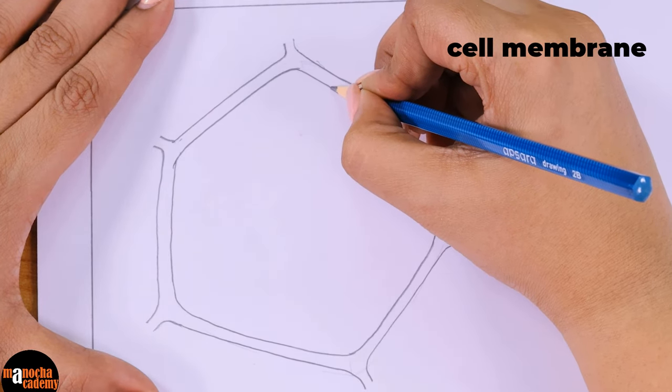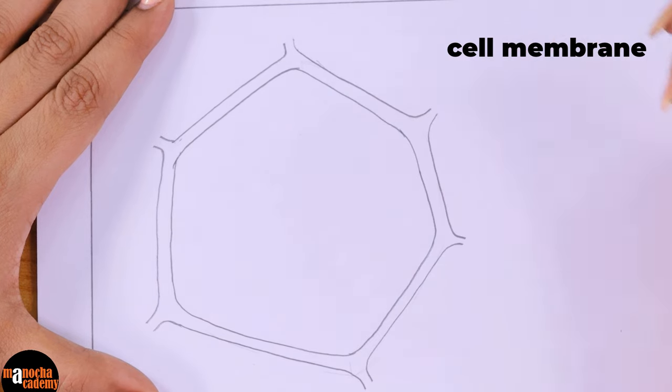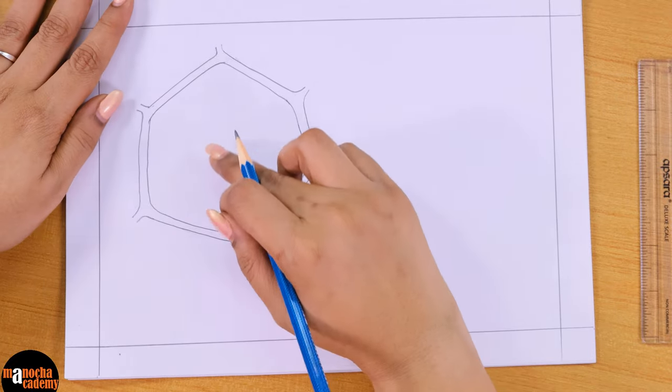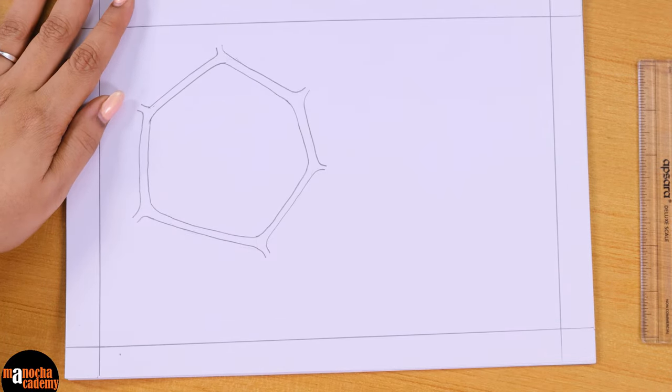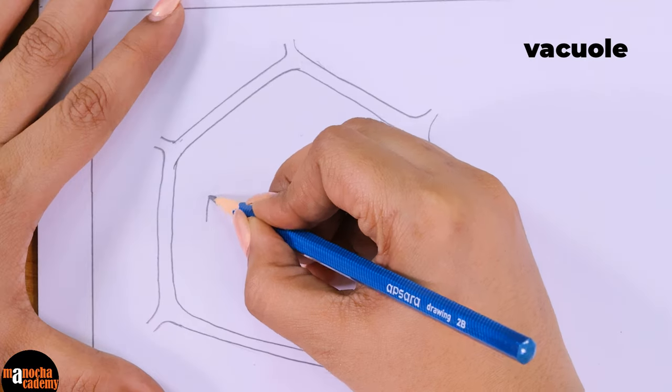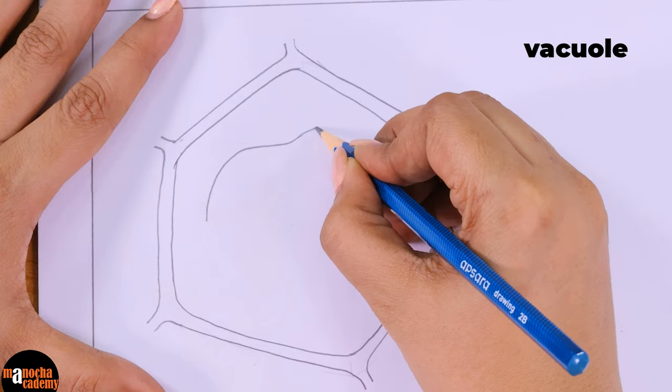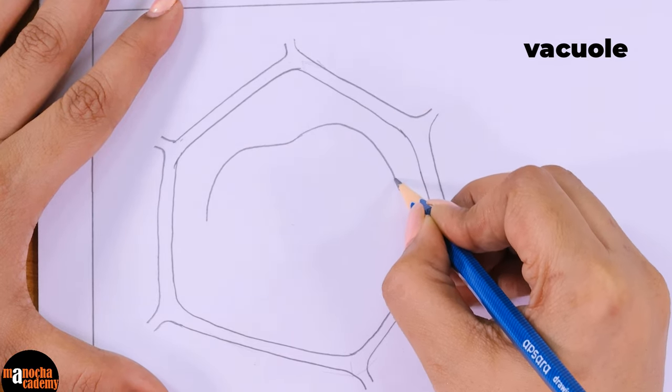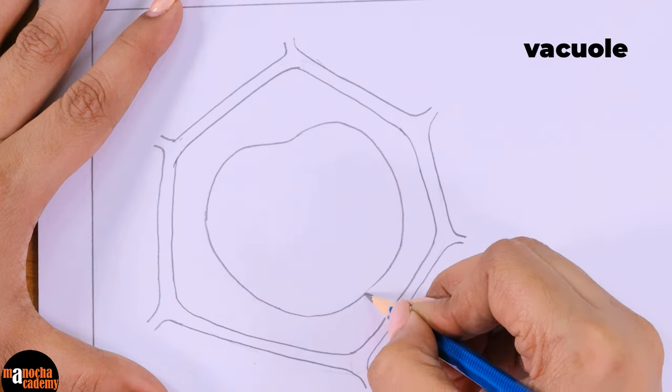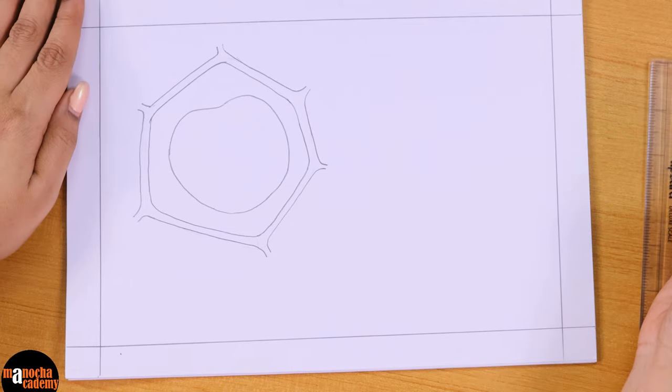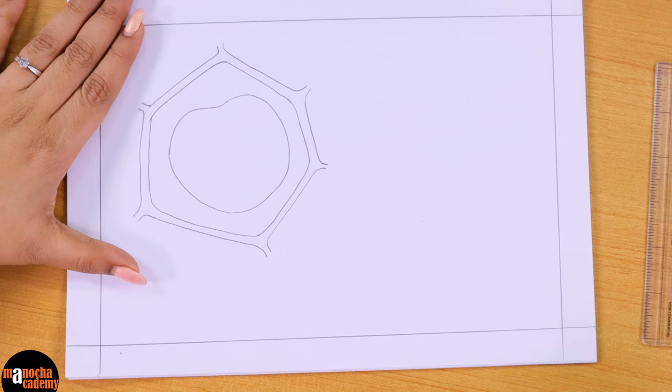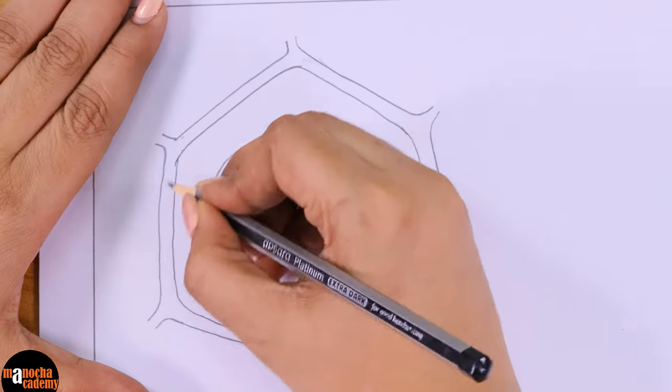Now in a plant cell, the nucleus usually gets pushed towards the periphery and the vacuole takes up the maximum space. So first and foremost, we'll draw the vacuole. Again, the shape of the vacuole can be as you want. I am drawing a large vacuole and I'm keeping some space so that I can draw the nucleus and the other cell organelles clearly. So this is the vacuole which occupies the maximum space inside the plant cell.